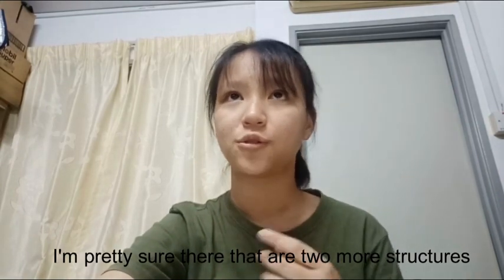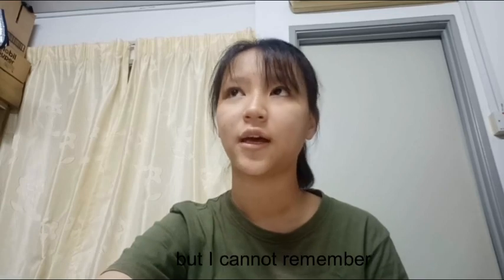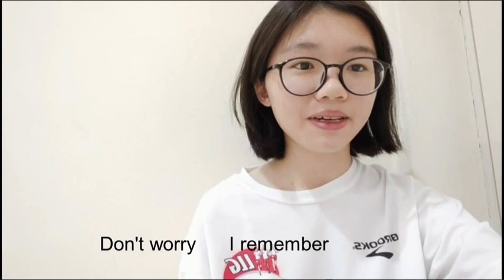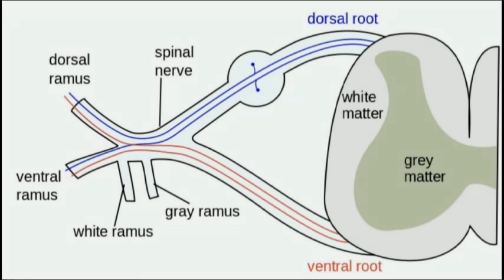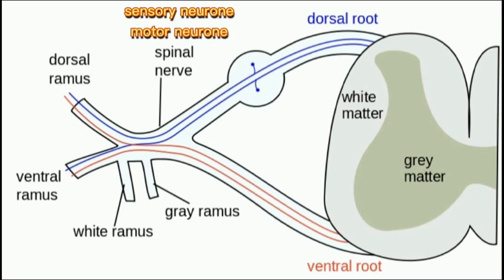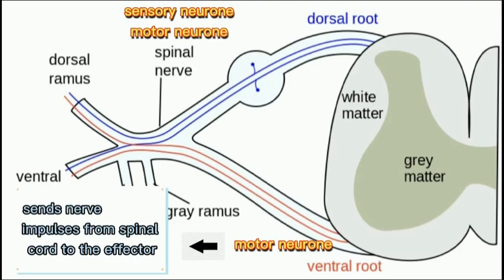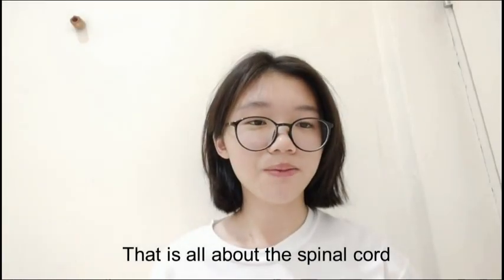There are two more structures: the spinal nerve and the ventral root. The spinal nerve extends from the spinal cord through two short branches or roots, which are the dorsal root and ventral root. The spinal nerve contains both sensory neurons and motor neurons. The ventral root contains motor neurons, so it can send nerve impulses from the spinal cord to the effectors.